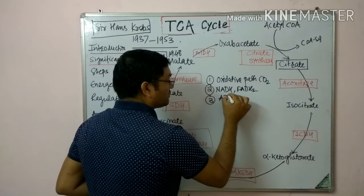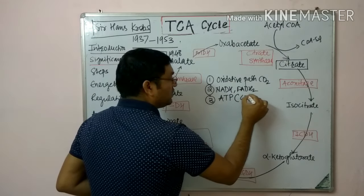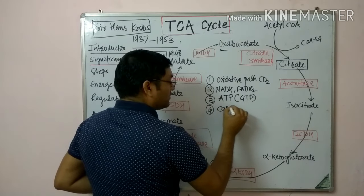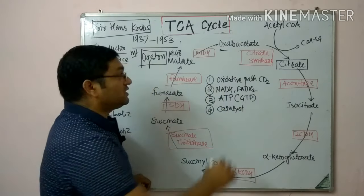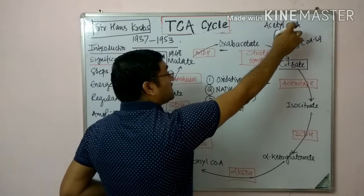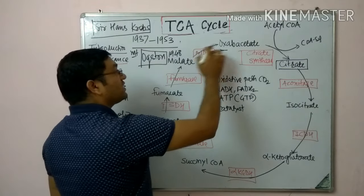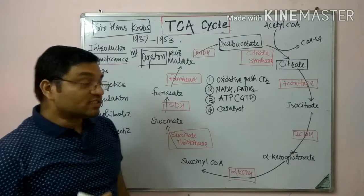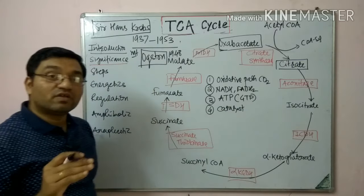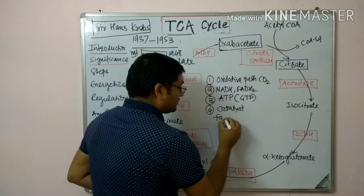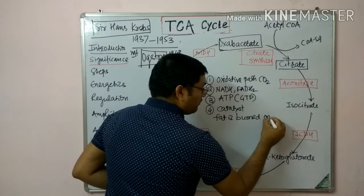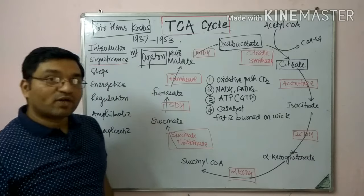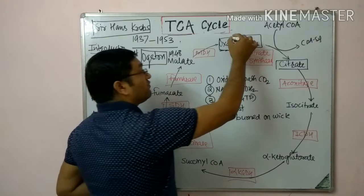There is synthesis of ATP — one substrate level phosphorylation reaction produces GTP, which is ultimately converted into ATP. Oxaloacetate acts as a catalyst in this pathway; it condenses with acetyl CoA to form citrate, and through all reactions is regenerated. That's why it is known as a catalyst. The important sentence is: fat is burned on the wick of carbohydrate, where the wick is oxaloacetate, which is generated from carbohydrate via pyruvate by pyruvate carboxylase.